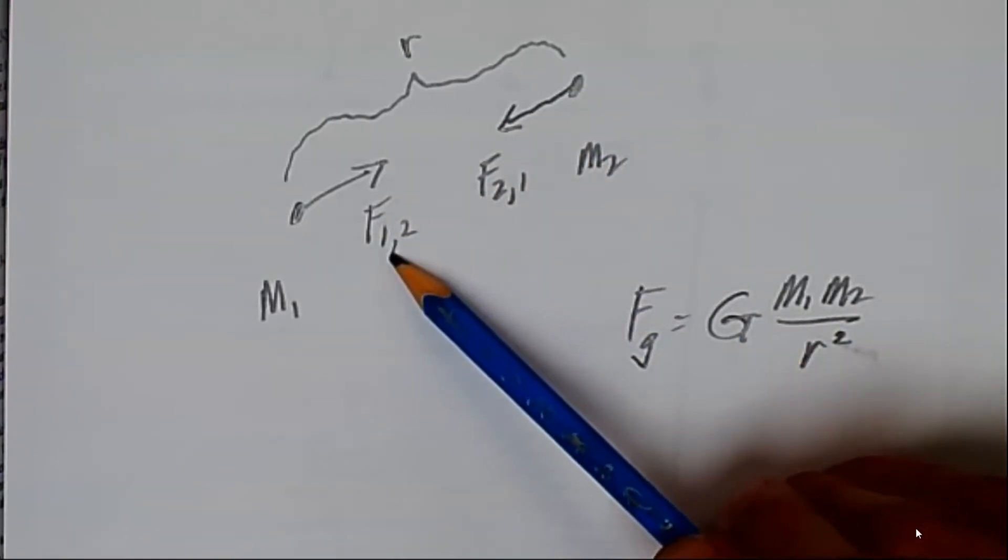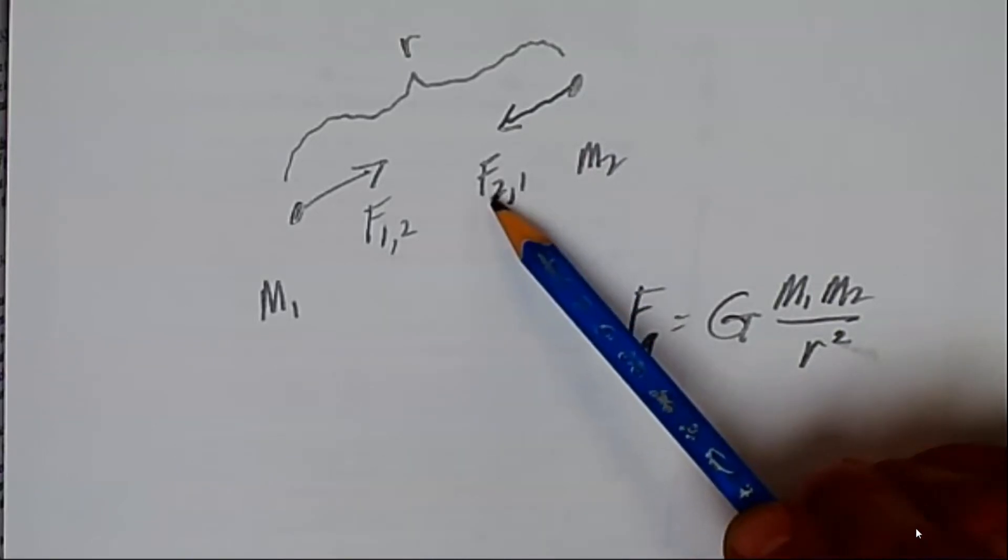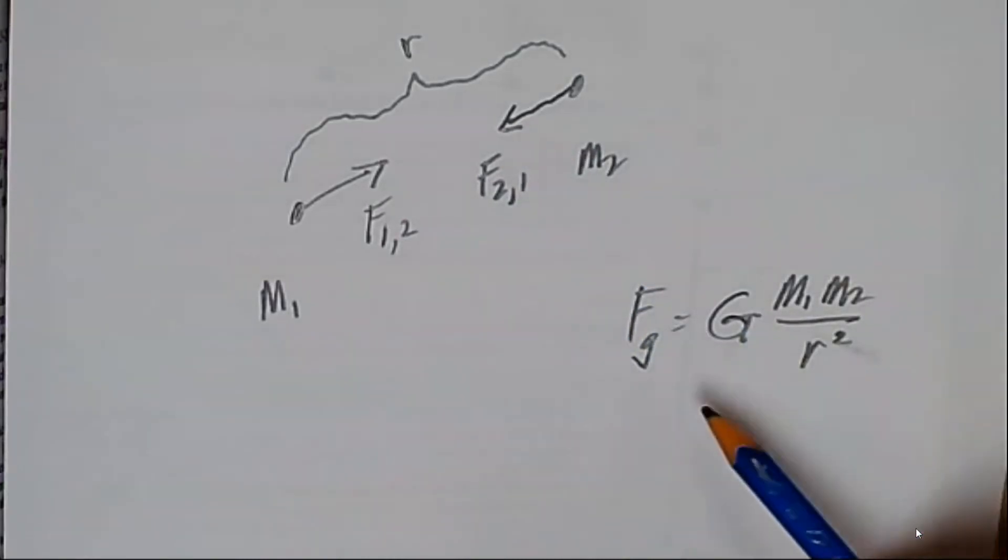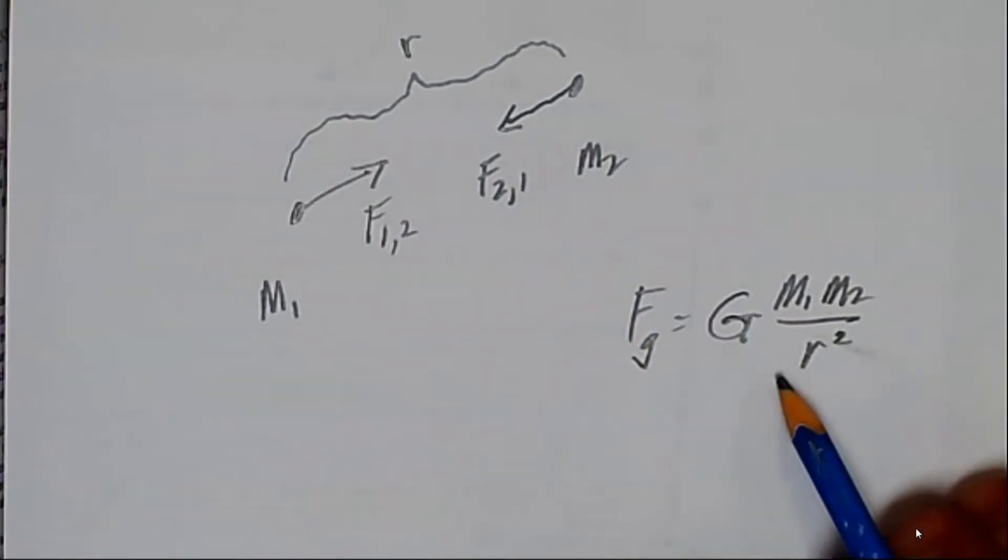Here's the force on one from two, and here's the force on two from one. They are equal and opposite forces, and their magnitude is calculated with Newton's law of universal gravitation given here.